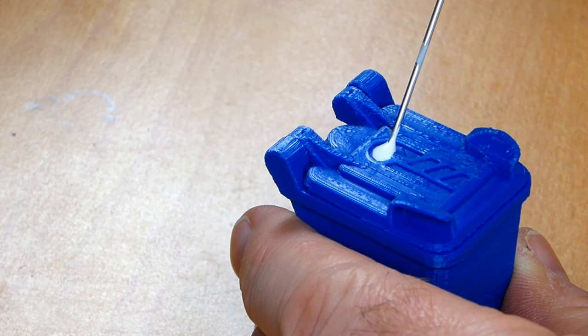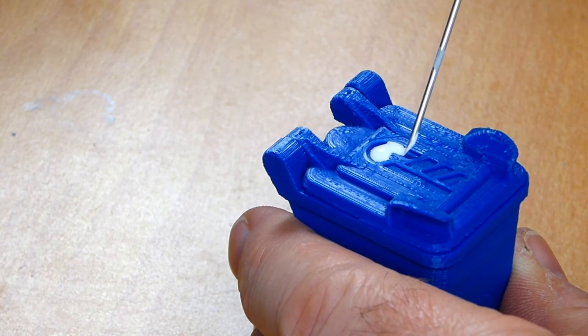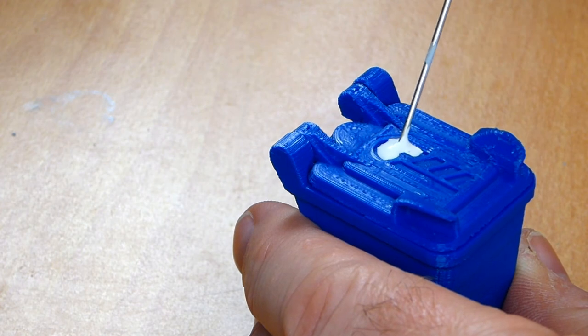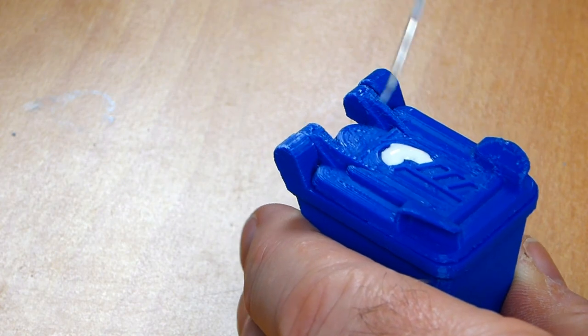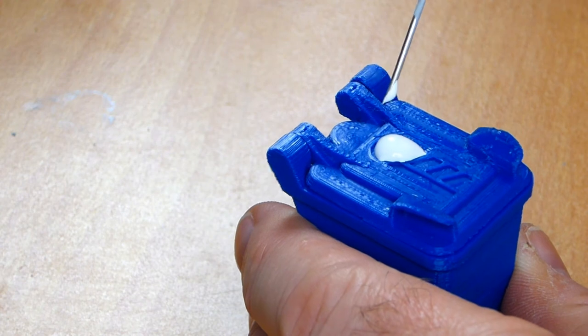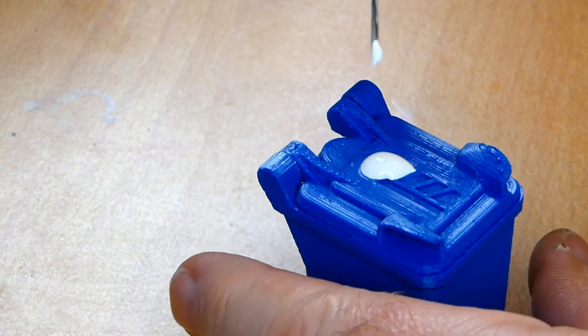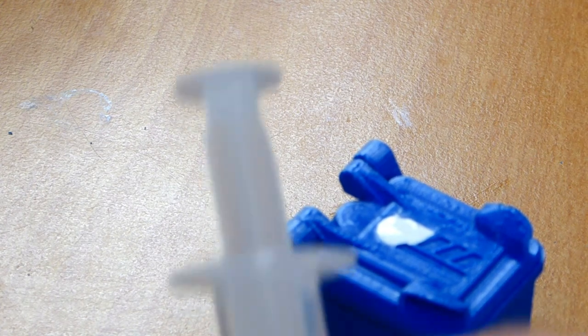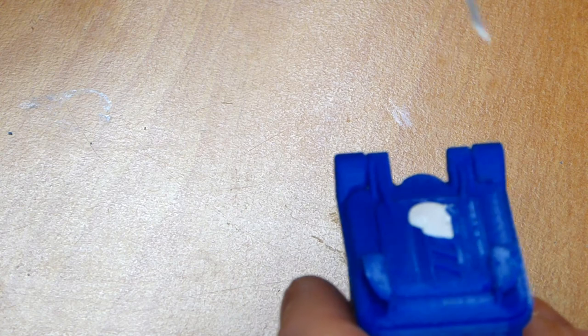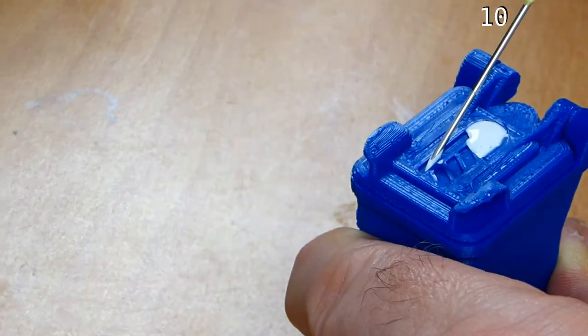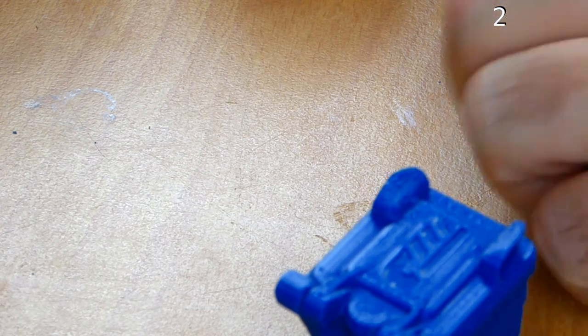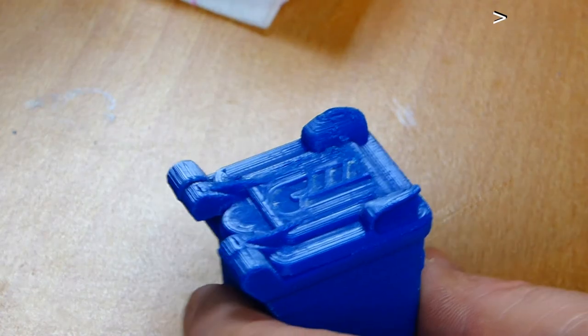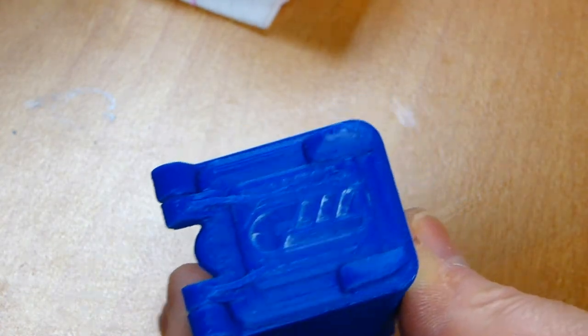And now I start filling area by area. A bit of overflow is not really a problem. I'll deal with that later. I said a bit of overflow, this is a bit much. The problem was the plunger of this syringe was a bit sticky, so I overshot. Let's try that again. I cleaned it up with a wet paper towel.